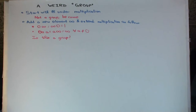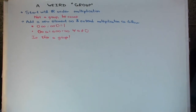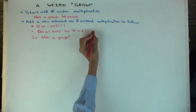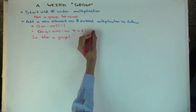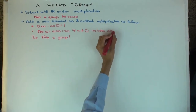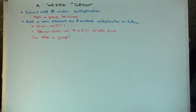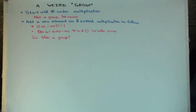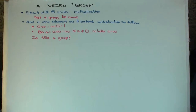In this talk I'm going to consider a weird thing which seems like a group — maybe it is a group, maybe it's not. The goal is to explore it and figure out whether it's a group. I start with considering the real numbers under multiplication — all real numbers including zero. So the question is: is this a group? Why not?